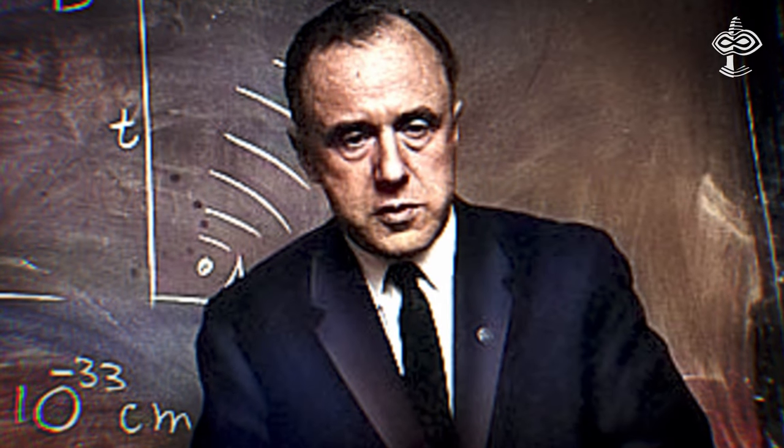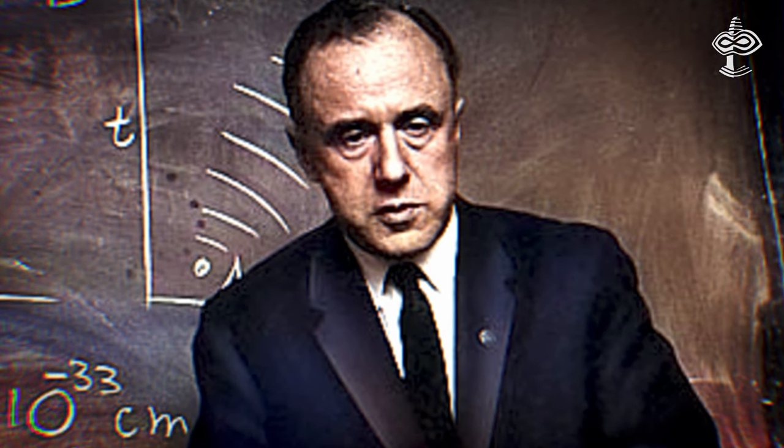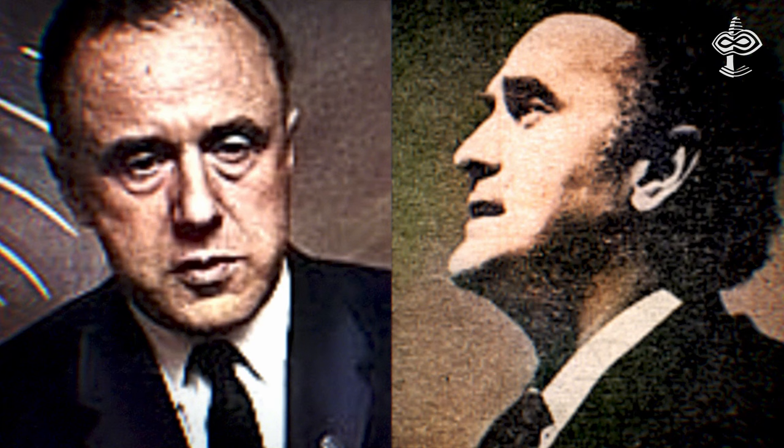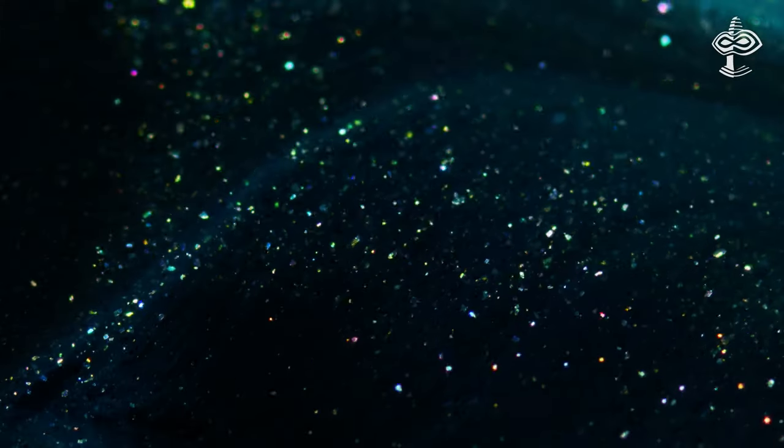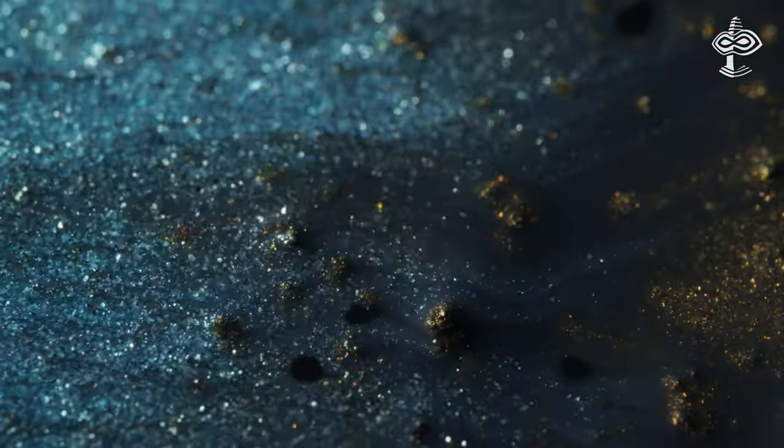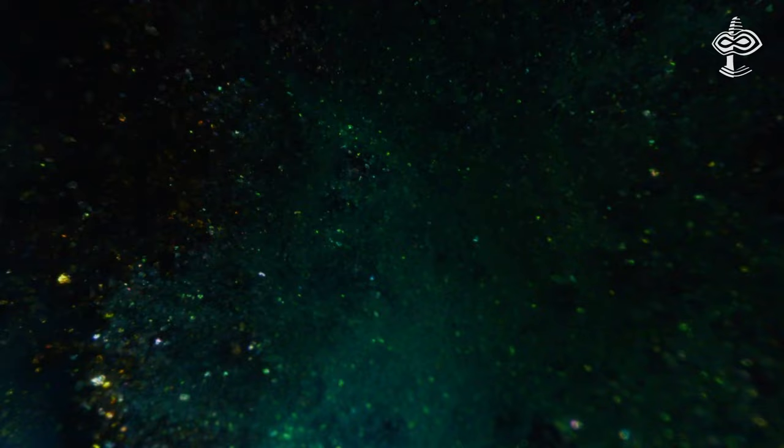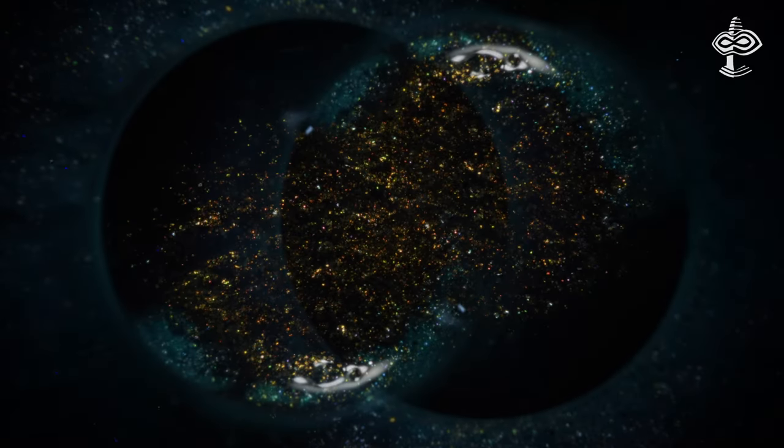Both John Wheeler's concept It from Bit and Uno Capvilliam's concept of computers hidden in matter and diverse structures that could be considered alive imply that complex structures and behaviors, including life and consciousness, can emerge from simple informational or computational processes. But where should one begin the search?